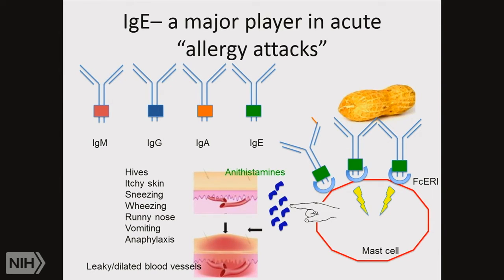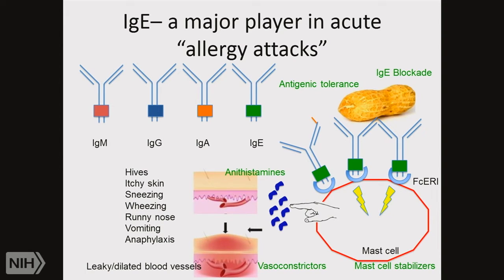What do we do? We give antihistamines to block histamine locally. We give vasoconstrictors like Sudafed to make blood vessels tighter. There is a mast cell stabilizer called cromolyn that can actually stop the mast cell from releasing even if it's being triggered. There is a drug called omalizumab (Xolair) which blocks IgE from getting to the mast cell — it can be very effective in treating asthma and chronic urticaria. And then antigenic tolerance: being exposed to what you're allergic to in the right way can make you no longer allergic to it. That's what allergy shots are. Dr. Guerrero will explain how we're also trying to give it by mouth to induce tolerance.